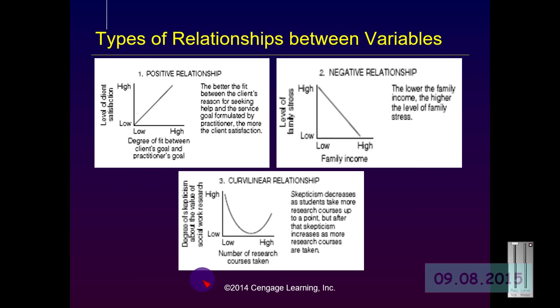A better example of curvilinear relationships is drinking red wine. Research received a lot of media attention indicating that drinking red wine was good for the heart — a perfect curvilinear relationship. As drinking red wine went up from zero to two or three drinks, we saw heart disease decrease. However, if you went beyond two or three drinks a day, heart disease starts to go up again.